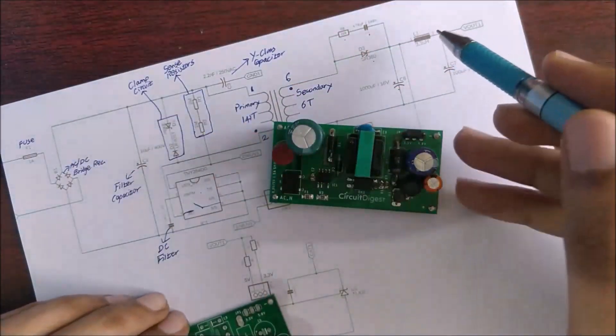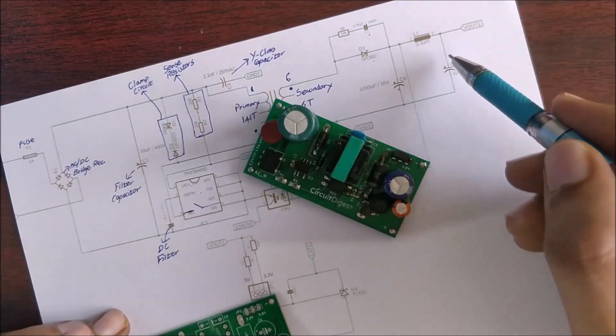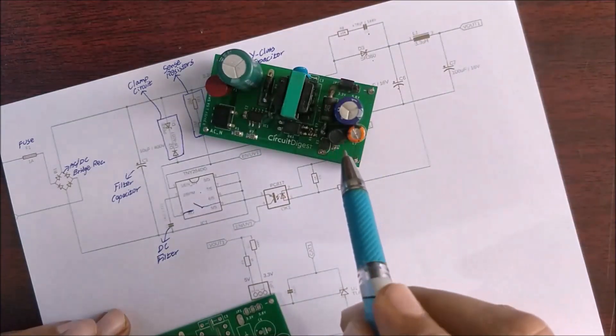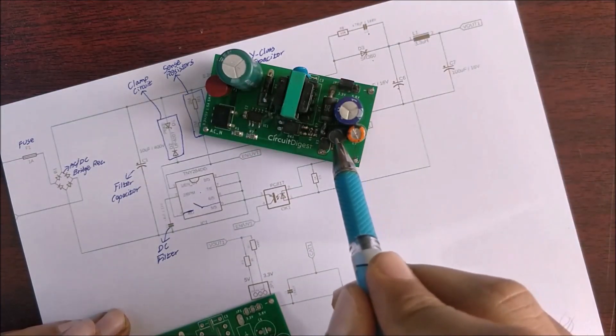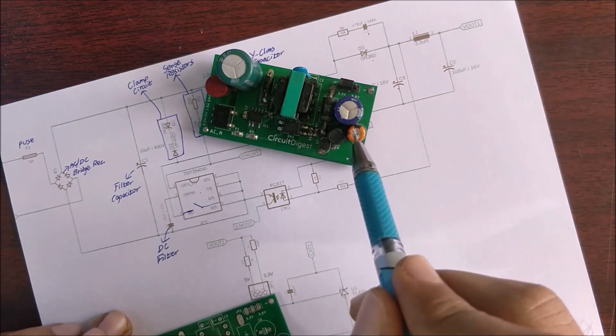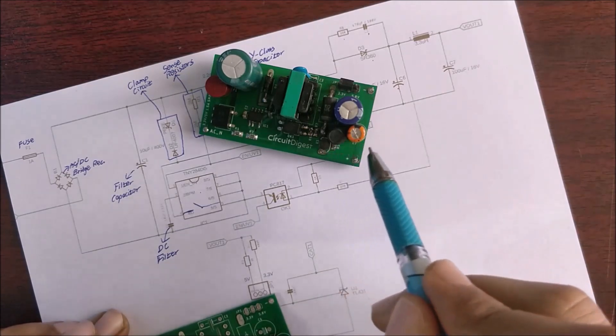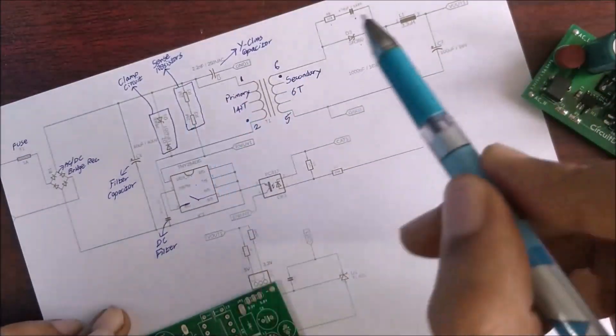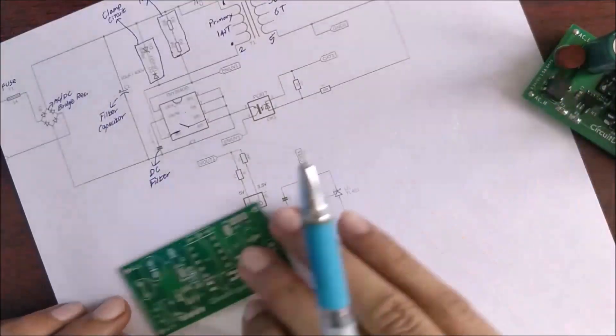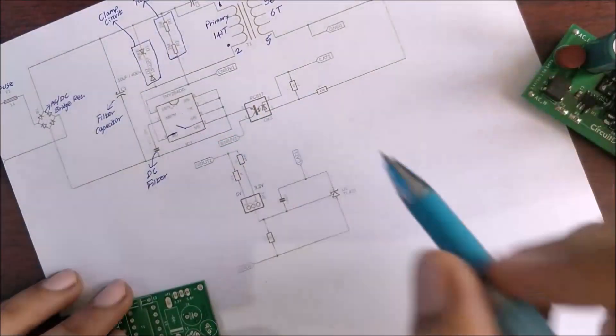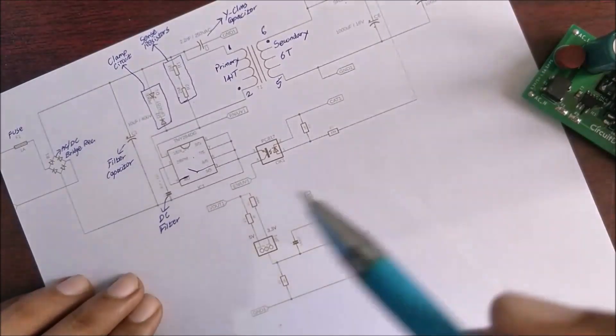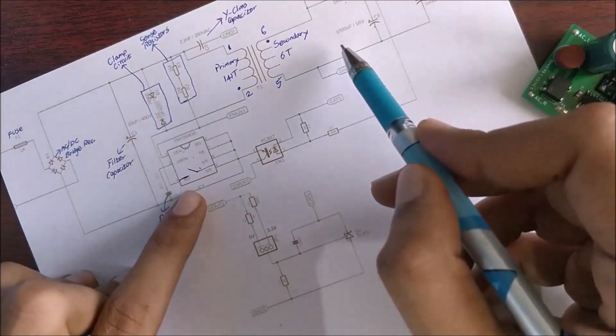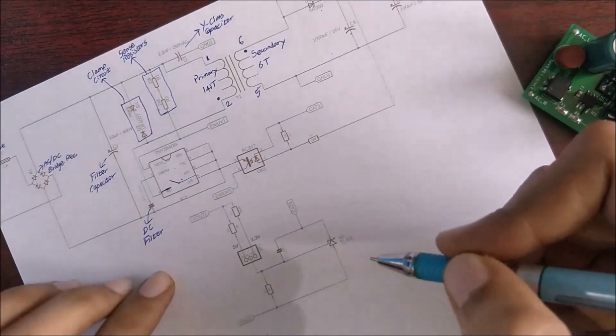And then after we have done the rectification we have another LC filter which is an inductor and a capacitor. On our board you can also find our LC filter. This is a drum inductor and this is a low ESR capacitor. Both of these together will form an LC filter. Now we have discussed the primary side and the secondary side. What's remaining is our feedback side. This feedback side will actually tell this controller IC when to turn on and when to turn off to maintain the required voltage on the secondary side.